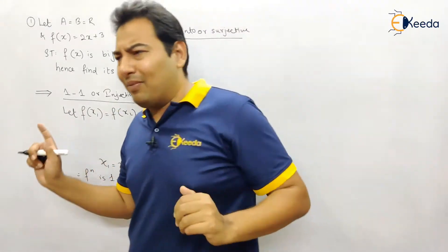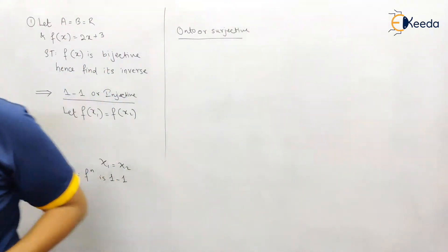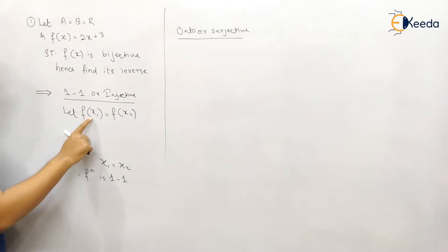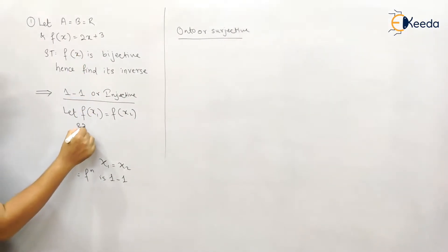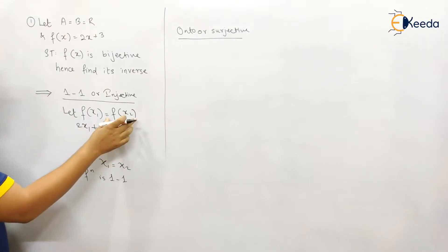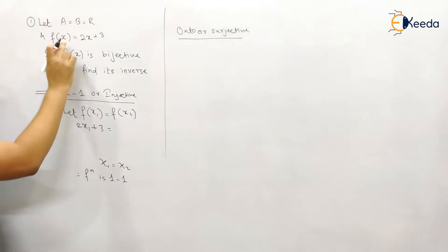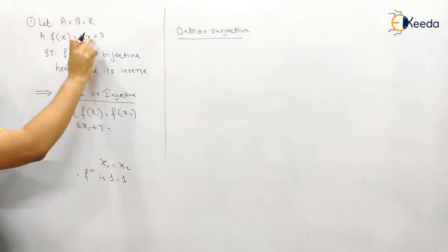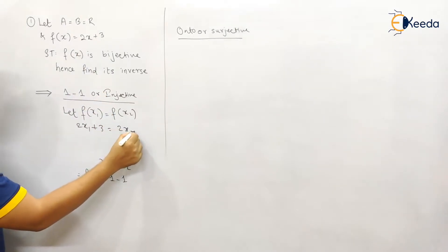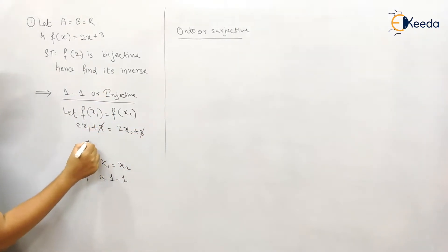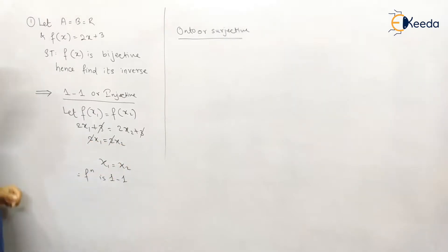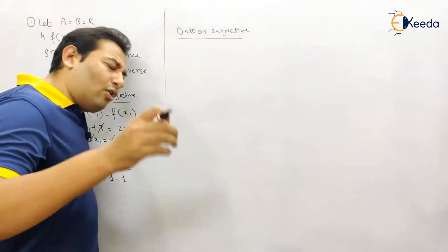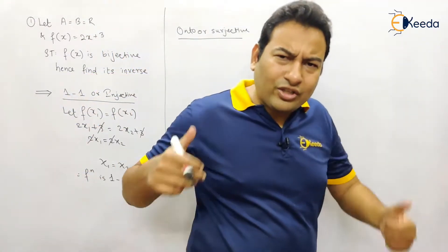We replace x with x1, giving f(x1) = 2x1 + 3, and replace x with x2, giving f(x2) = 2x2 + 3. Setting them equal, the 3's cancel, leaving 2x1 = 2x2, so x1 = x2. Therefore the function is one-to-one. The steps are always fixed.